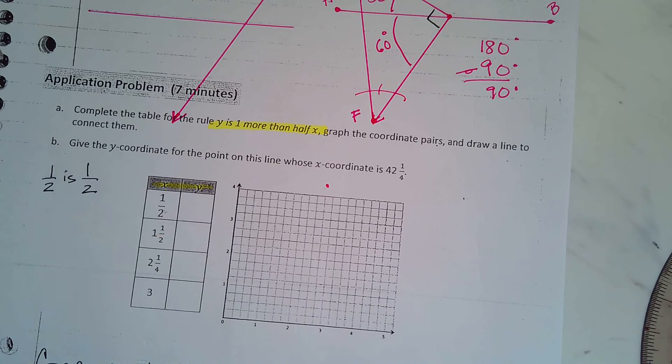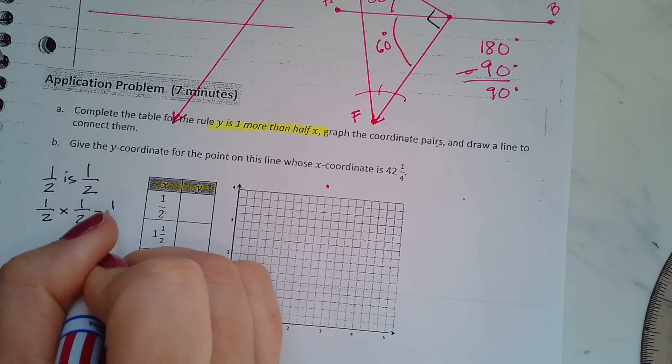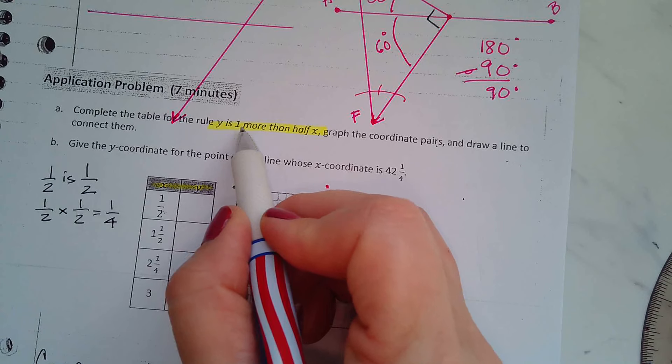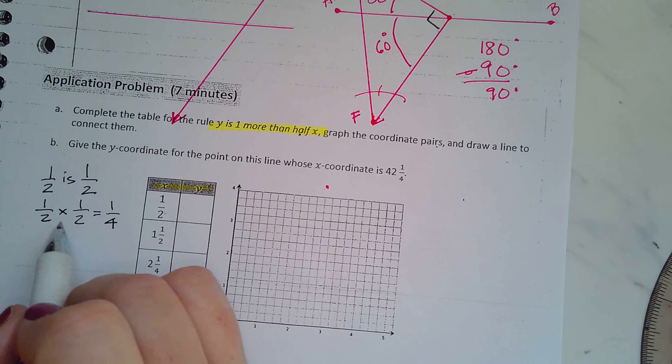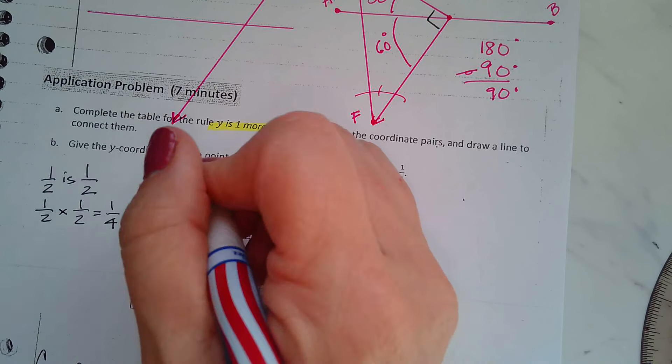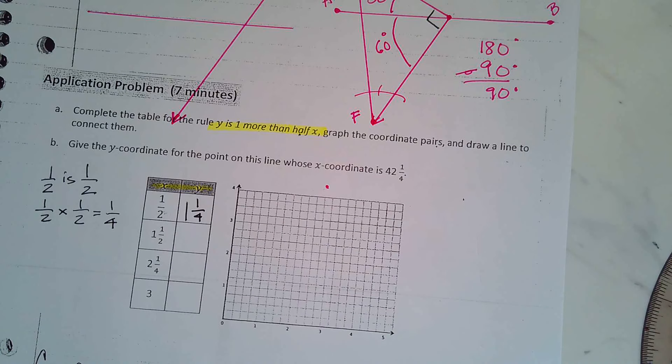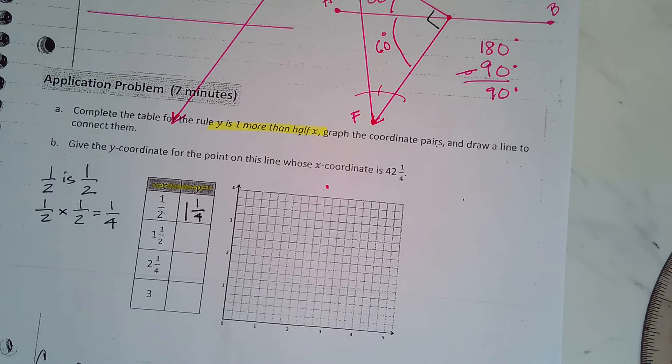So one half times one half is one fourth, right? So the rule Y is one more than half X. So what is half of X and add one? So our Y would be one and one fourth. Alright. What I want you to do is I want you to complete the table and draw a line to connect the points. And then come on back and check your work.